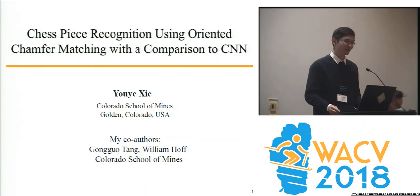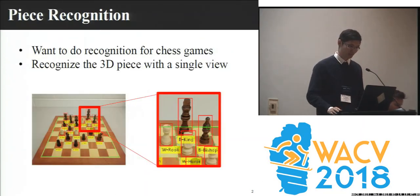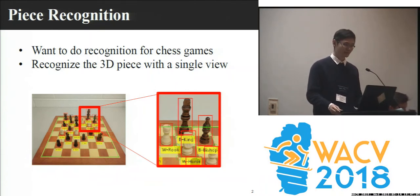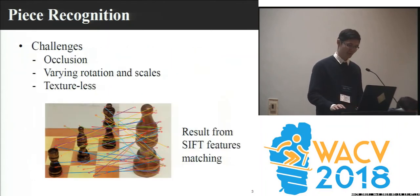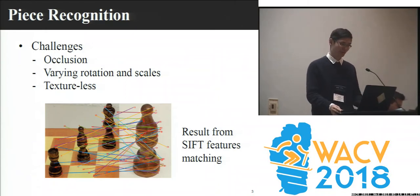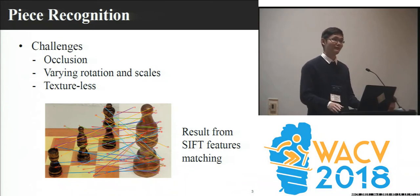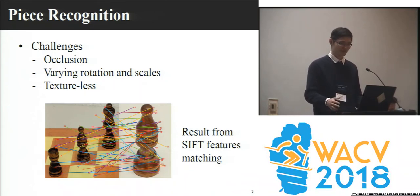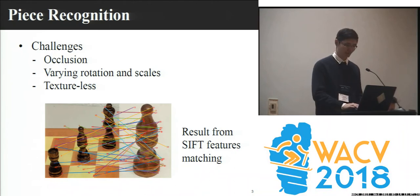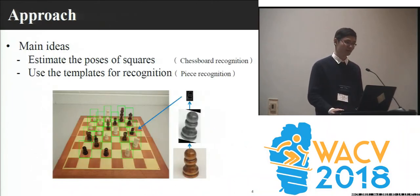The problem we want to address is recognition for chess games. We want to recognize the 3D pieces with only a single view. There are several challenges, including occlusion, and based on the location of pieces on the board, you will have different rotation and scales, and it is also textureless. You could use CNN for this job if you have a large-scale dataset, but that is not true for our case. So we propose a template-based method.